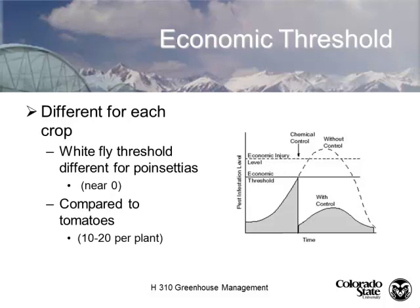The economic threshold is where we start to see some form of damage occurring to that crop. With greenhouse-grown tomatoes, it's going to reduce the productivity of the plant. With poinsettias, it's going to reduce the aesthetic quality and thus the ability to sell the plant. Once we hit this economic threshold, we start some sort of control — chemical or otherwise. If we let the infestation continue to climb, we'll surpass the economic injury level and lose our crop. We want to maintain populations below the economic threshold.